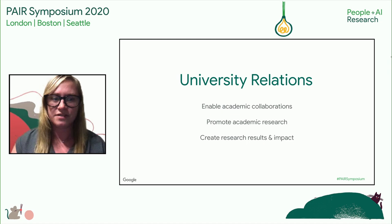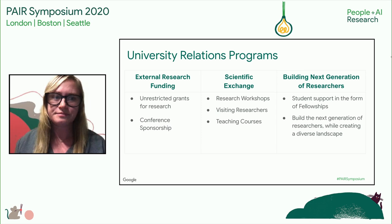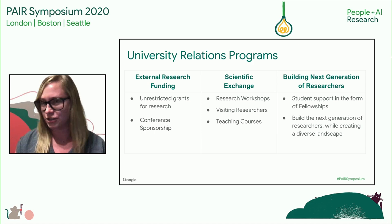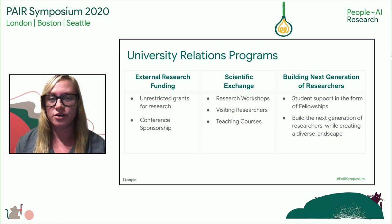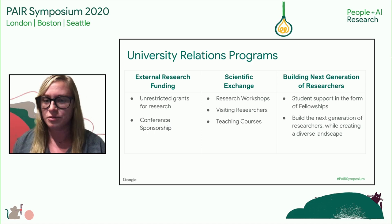Some of the results of this are papers, open source code, data sets, and supports for all researchers across Google. We have a couple of different programs across University Relations that offer bi-directional flow — everything from external research funding, scientific exchange including research workshops such as this one, and building the next generation of researchers. All of these lead to great outcomes.